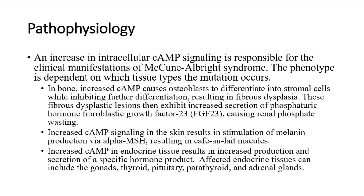Increased cAMP signaling in the skin results in stimulation of melanin production via alpha-MSH, resulting in café au lait macules. Increased cAMP in endocrine tissue results in increased production and secretion of a specific hormone product. Affected endocrine tissues can include the gonads, thyroid, pituitary, parathyroid, and adrenal glands.